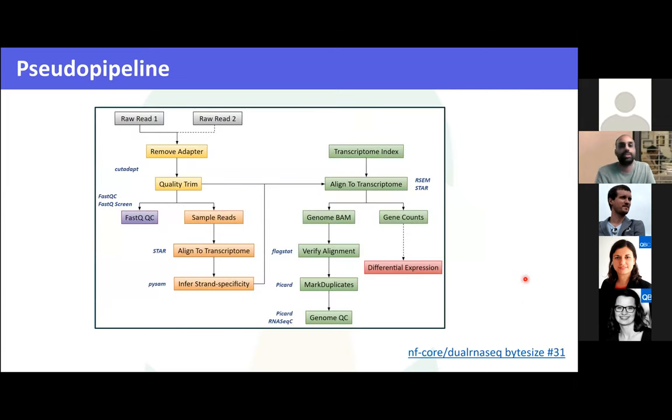In terms of the RNA-seq itself, it's probably one of the most popular applications of next-generation sequencing. And most people doing experiments will have come across some sort of RNA-seq data, I imagine, especially bioinformaticians. And what you're doing is you are quantifying the expression of genes in a genome at a given time. And this is typical of bulk RNA sequencing.